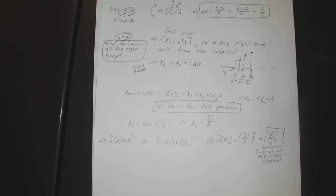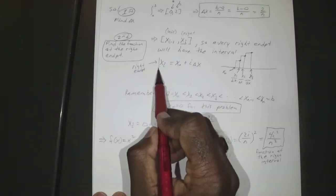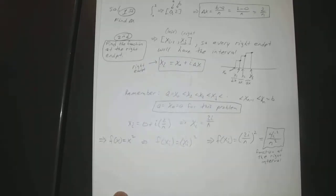If we used the left endpoint, we would start at x0, so instead of x sub i, it would be x sub i-minus-1 — those would be all of your left endpoints. This right endpoint formula is only used when they ask for the right endpoint approximation.